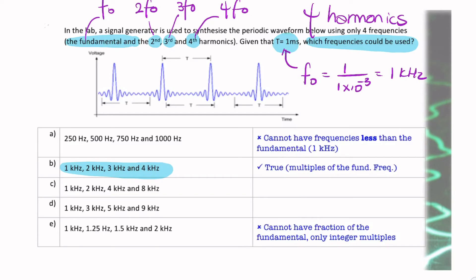So let's just look at the incorrect answers. It can't be A because it's got these frequencies, which are all less than F0. And the fundamental is the lowest frequency. You can't have any frequency in a Fourier series expansion that's less than the fundamental.